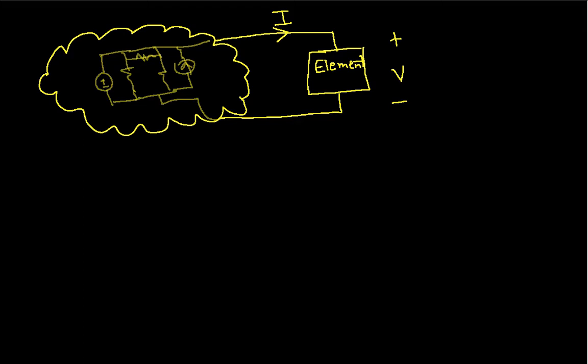To start with, you'll notice that we have an element of a circuit. This could be a linear element, but typically it's a nonlinear element. We have the current going into the element labeled I and the voltage across the element labeled V. Over here we have the rest of the circuit — basically everything in the circuit except the element. For now, we're not going to worry much about what that is.